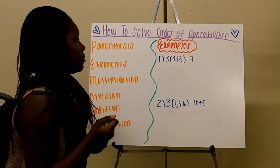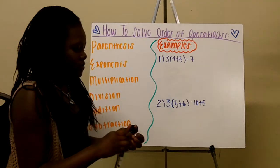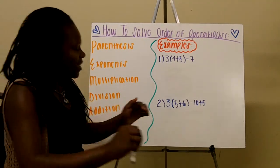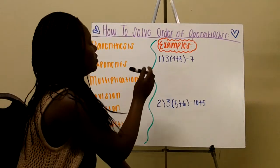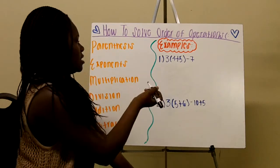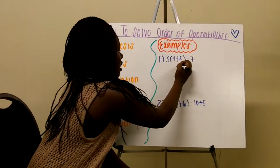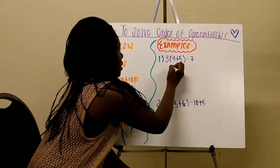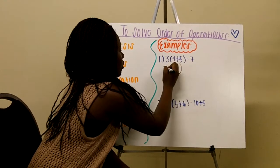So I have two examples that I'll be doing. And so we will start off with a parenthesis, so 4 plus 5, which gives you 9, and then you bring down your other numbers.